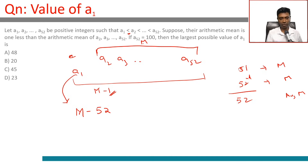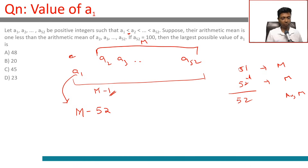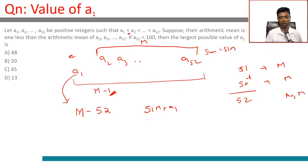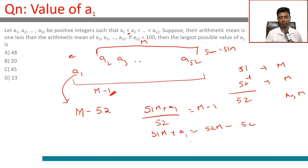The average of those 51 numbers is m. If we add one more number equal to m minus 52, we are taking one on average from each of the 52 entities, so the average becomes m minus 1. The algebraic way: the sum of a2 through a52 is 51m, so (51m + a1) / 52 = m − 1, giving 51m + a1 = 52m − 52.